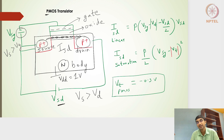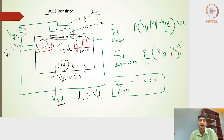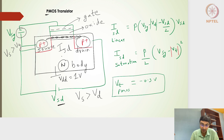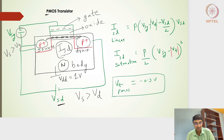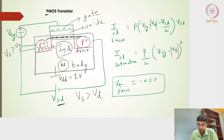In the NMOS, the majority carriers are electrons flowing from source to drain, so the current direction is from drain to source. In the PMOS, holes flow from source to drain, so the current direction is also from source to drain. The current equations can be estimated very similarly to how they were derived for the NMOS transistor — we have ISD in a linear region and a saturation region.